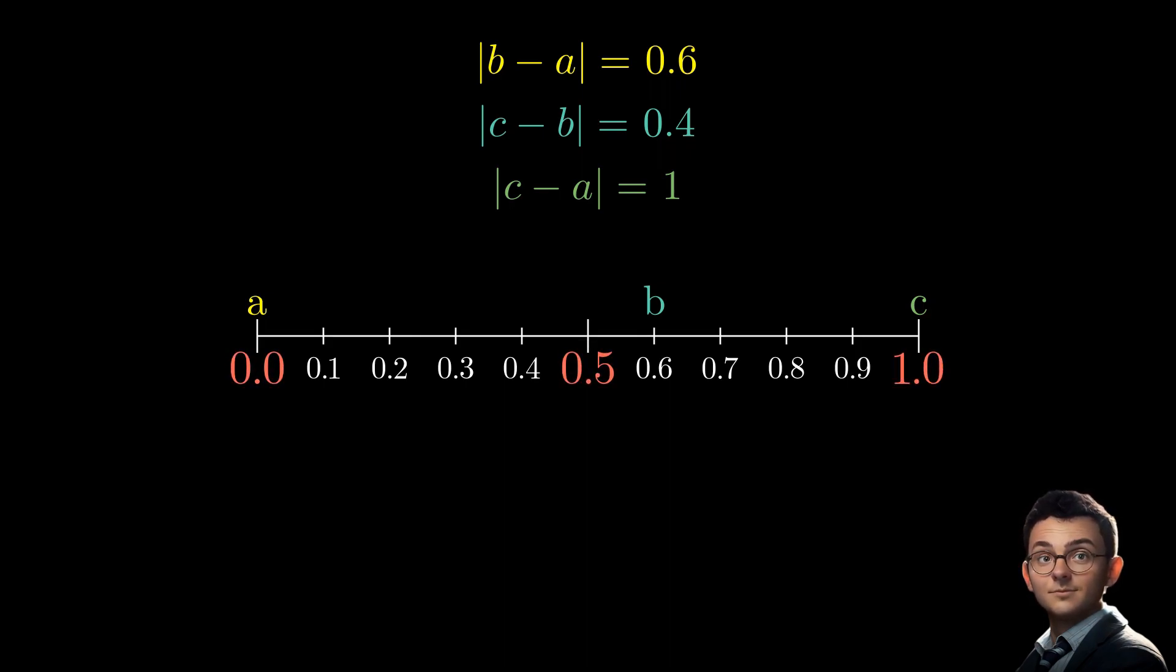According to the pigeonhole principle, two numbers will be placed in the same interval. Without loss of generality, let's call them b and c, as illustrated in this example. Finally, the distance bc, or the absolute value of the difference between b and c, cannot exceed 0.5.